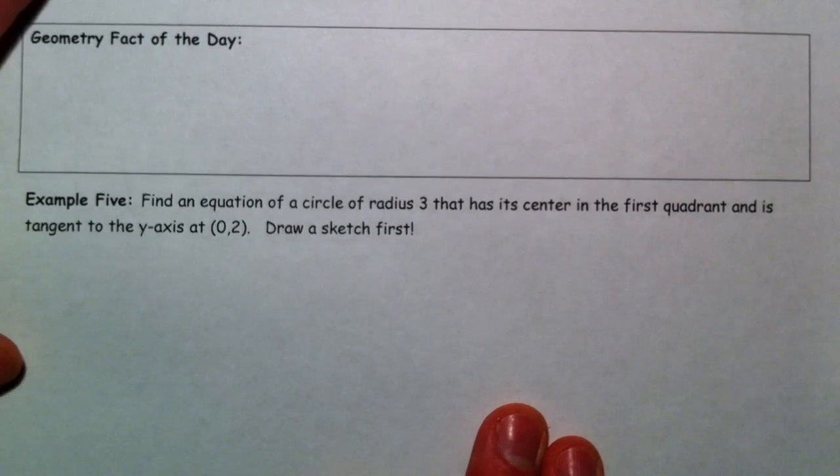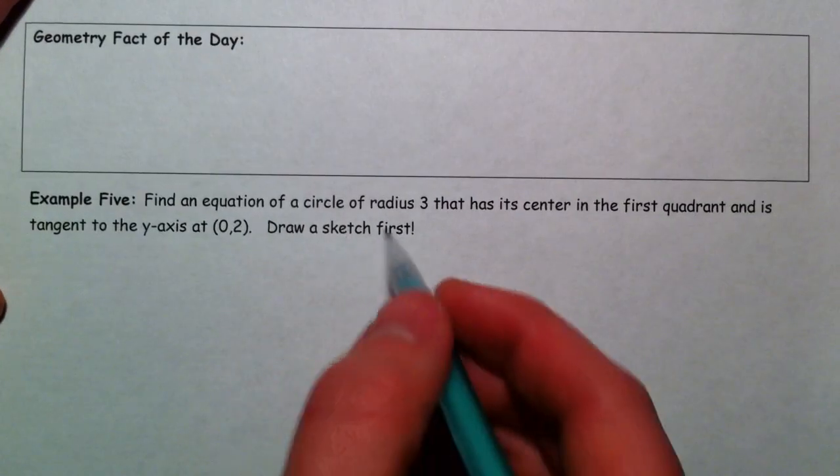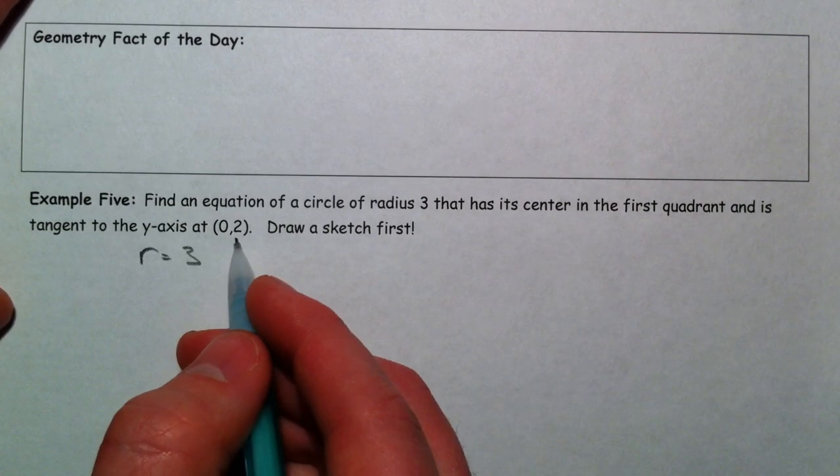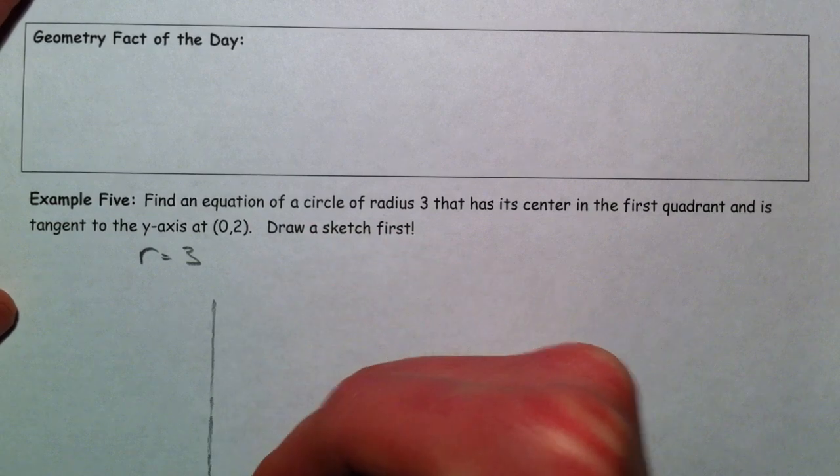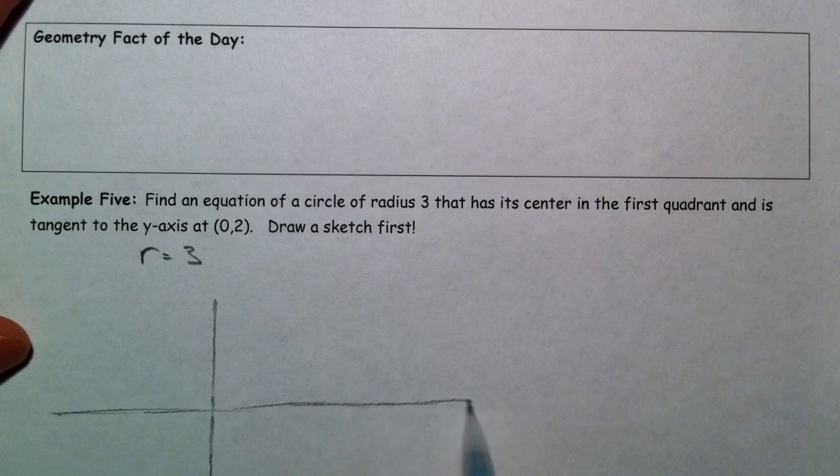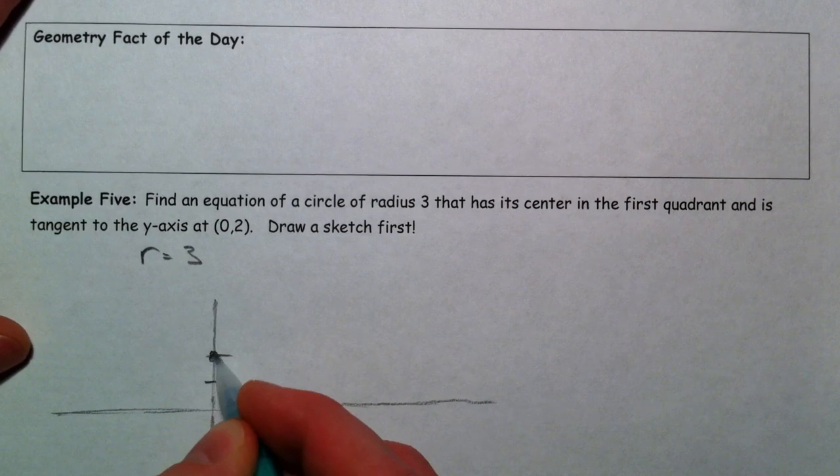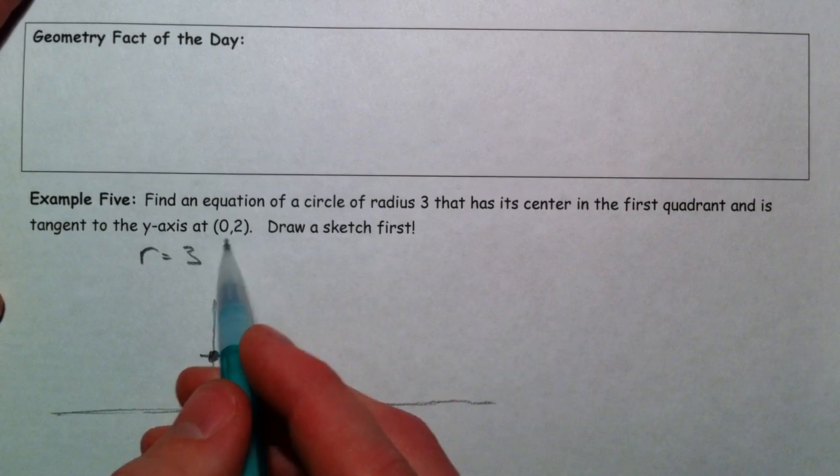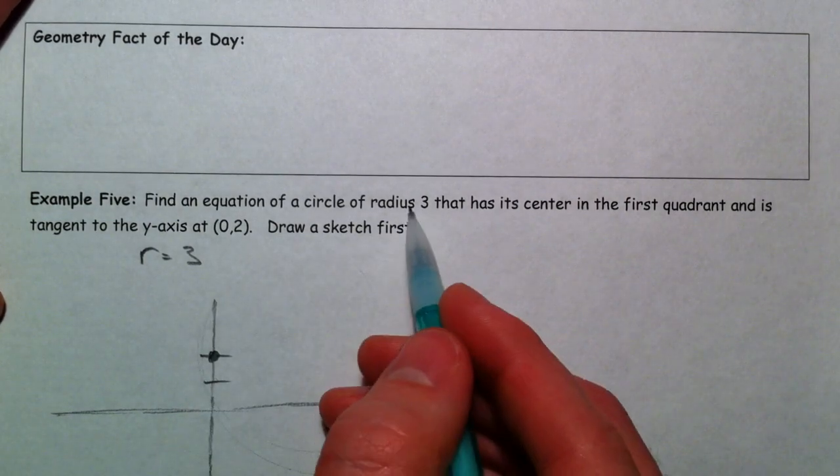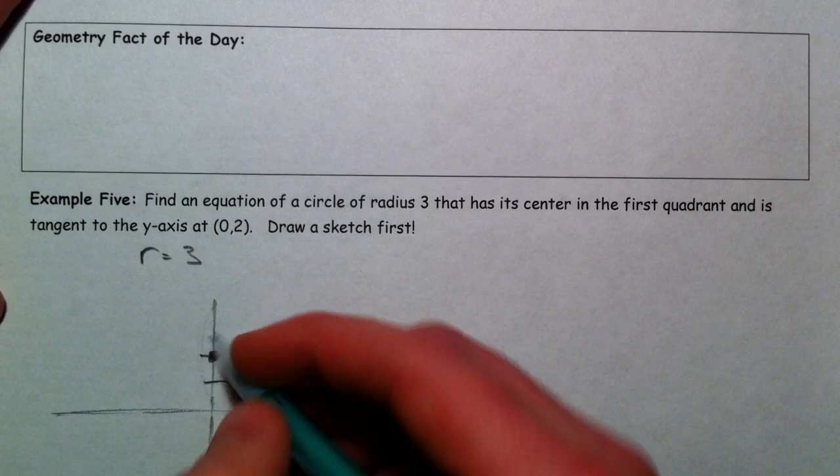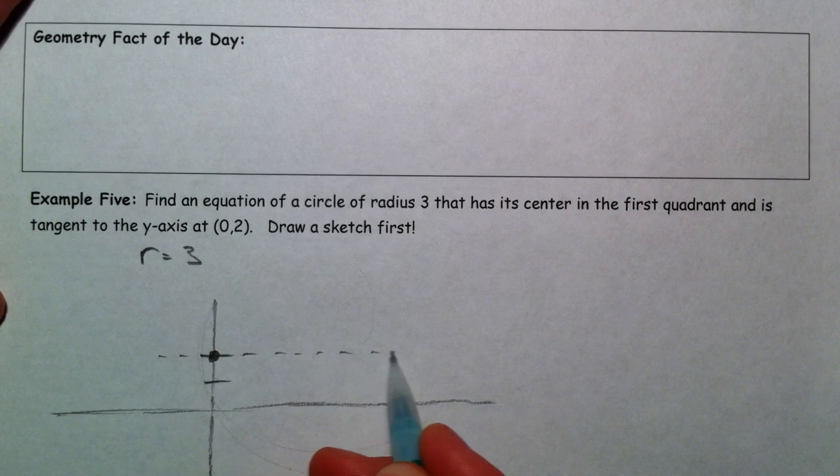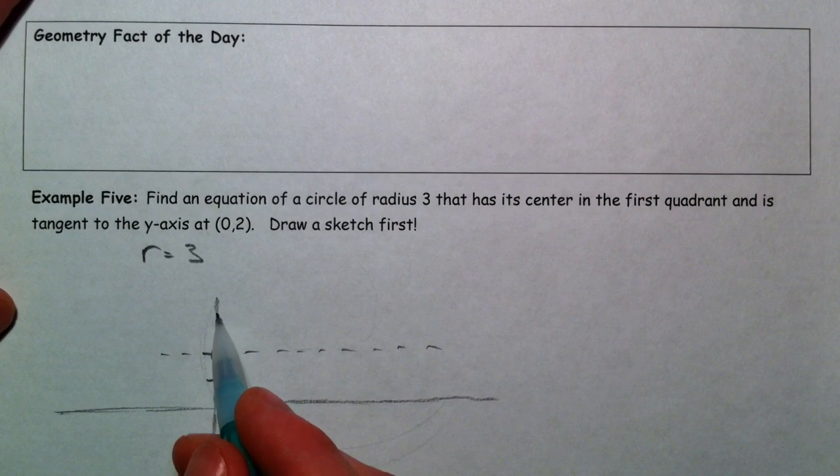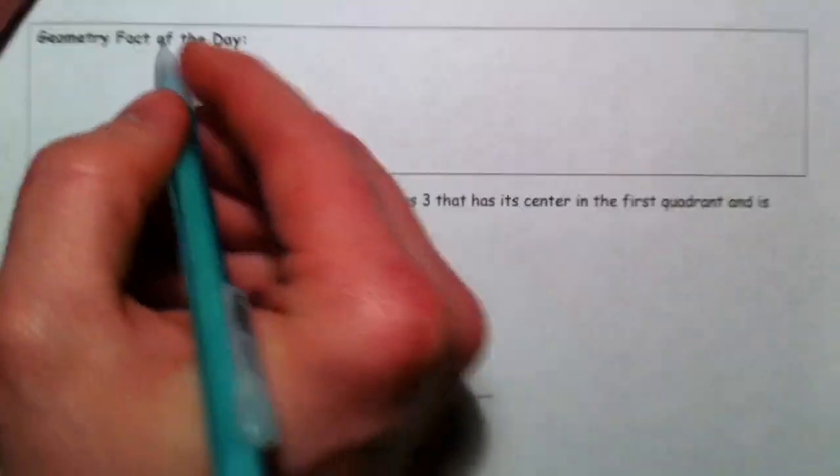Alright. I'm going to get back to the geometry fact of the day. Let's just find an equation of a circle of radius 3 that has its center in the first quadrant and is tangent to the y axis at 0, 2. Its center has to be in the first quadrant someplace. And so the radius is 3. And it's going to be tangent. And so, we need our center to be someplace that's perpendicular. And so, the radius of this circle is going to be perpendicular to the tangent. And that's the geometry fact of the day. The radius of the circle is perpendicular to a line tangent to the circle.